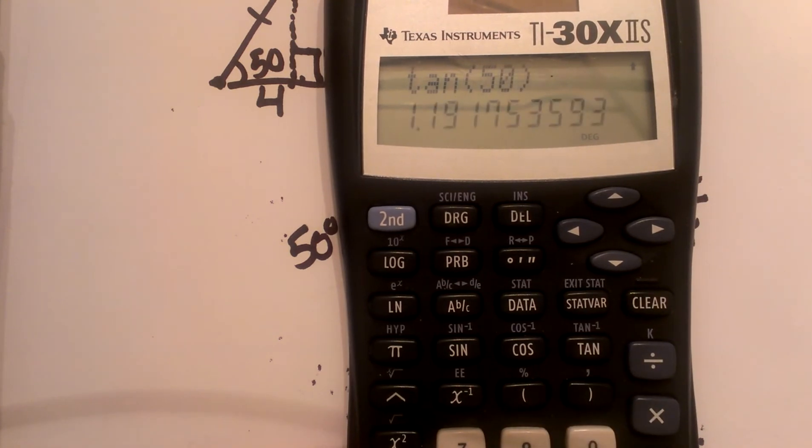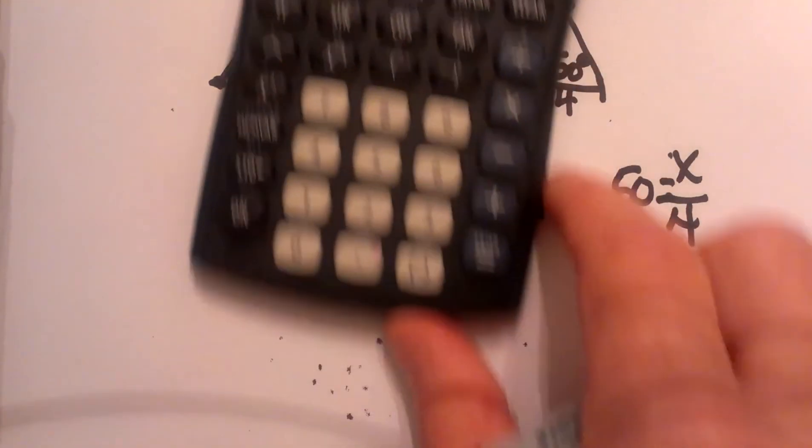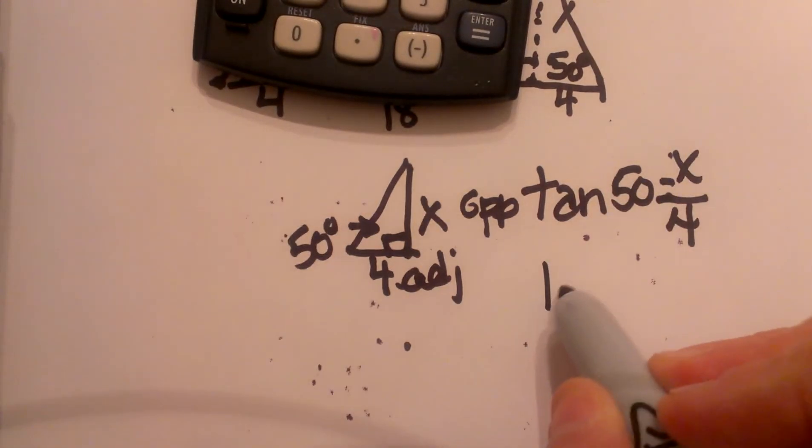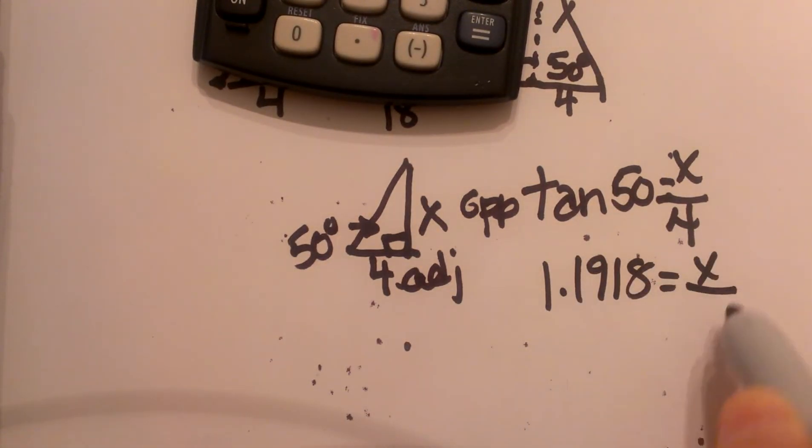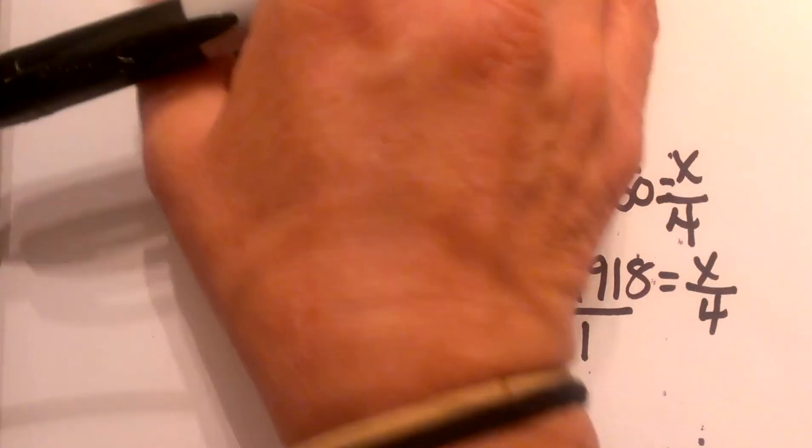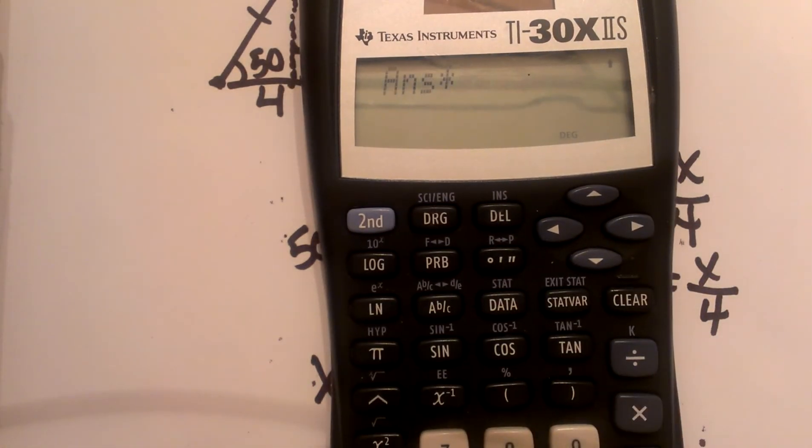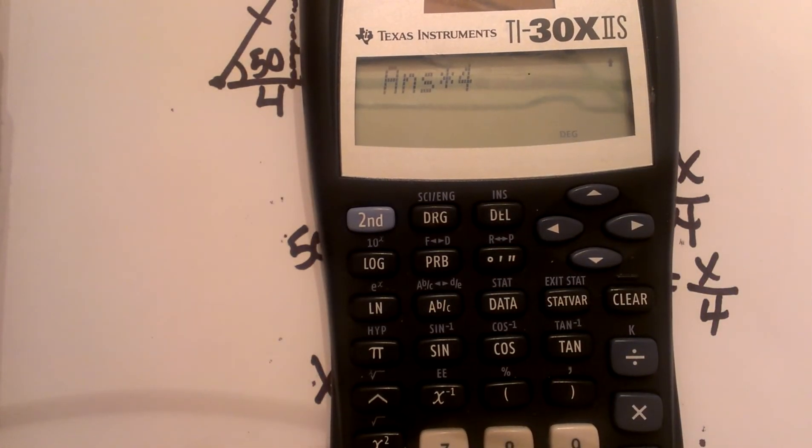And we get 1.1918, so 1.1918 is equal to x over 4, and the quickest way to solve that is just to do a cross product. So x times 1 is x and 1.1918 times 4, I have already got that in the calculator so I am just going to do times 4 and that comes out to be 4.77, we will round it to hundredths, 4.77.